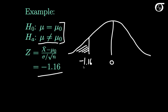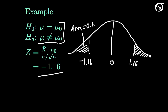We're interested in the area in the left tail beyond our test statistic. But we also note: if we had gotten a value of 1.16 on the right side, we would have thought that just as unusual and just as much evidence against the null hypothesis. So we're not just looking at the left tail — we also incorporate the same area in the right tail. Since the standard normal distribution is symmetric about 0, the p-value is double the area in the tail beyond our test statistic. Since that tail area equals 0.1230, our p-value is 2 × 0.1230 = 0.2460.